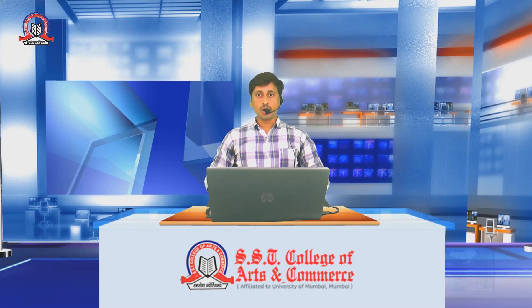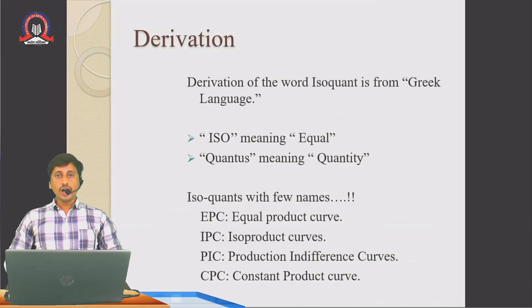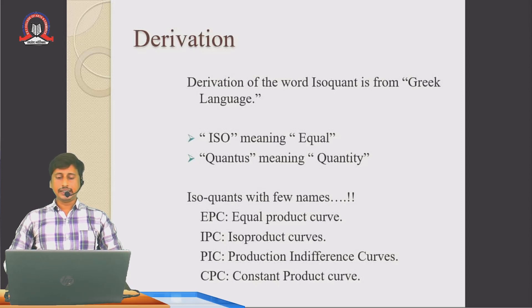The topic is Isoquants, their features and producer's equilibrium. The word isoquant is derived from the Greek language — 'iso' means equal and 'quant' means quantity, that is equal quantity. The isoquant is also known as equal product curve (EPC), isoproduct curve (IPC), production indifference curves, and constant product curve.